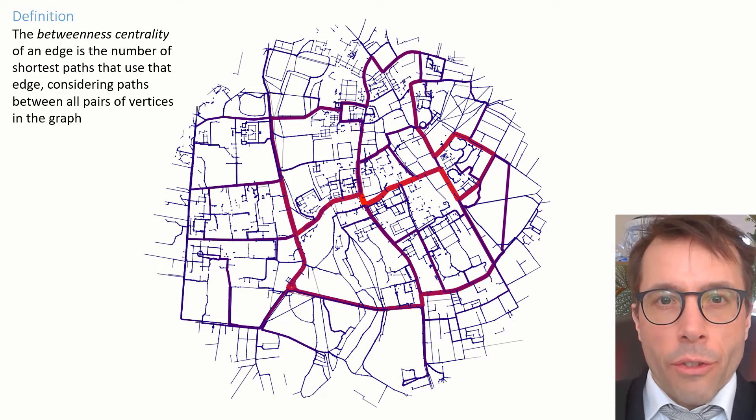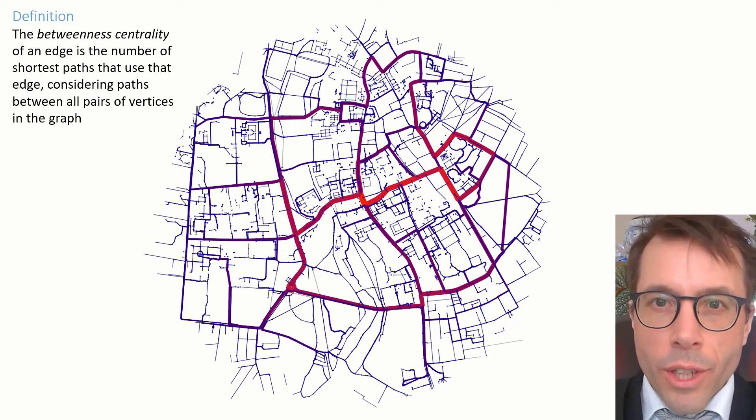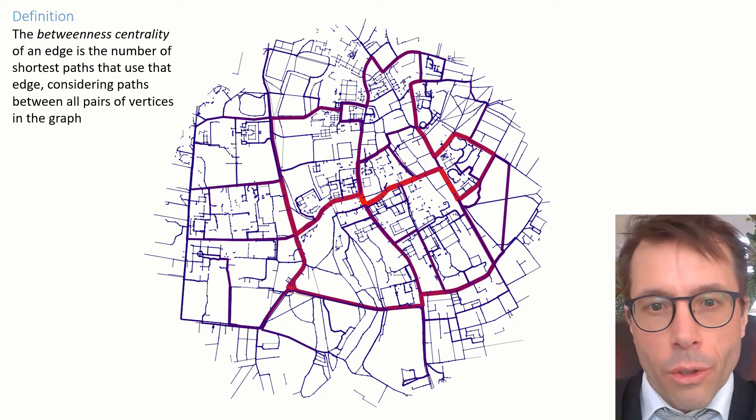You may have come across this idea before if you've taken a course on networks and data science. This metric, the number of shortest paths that use a given edge, is called the betweenness centrality of the edge. I'm just throwing this out in case you're interested in the idea. We're not going to need it for the algorithms we're studying, but it's good to know.